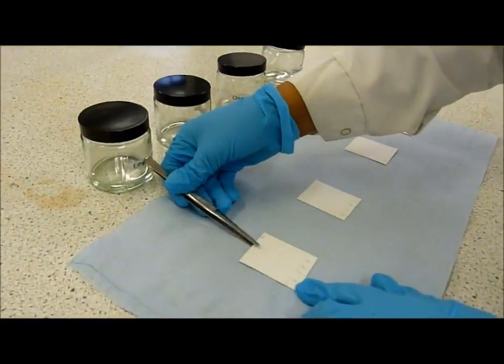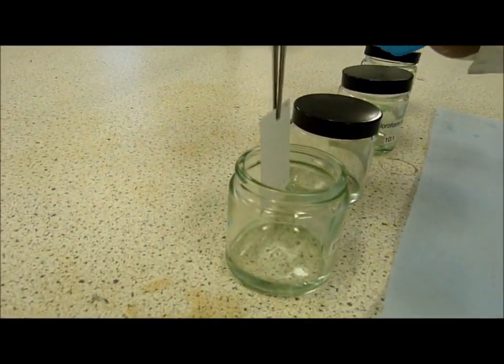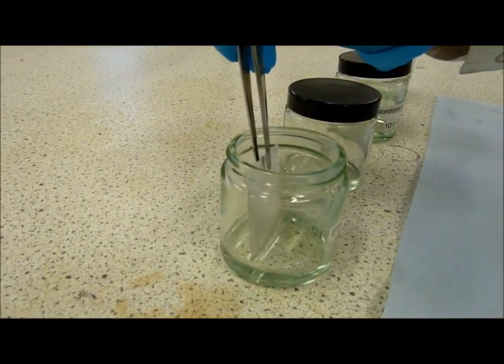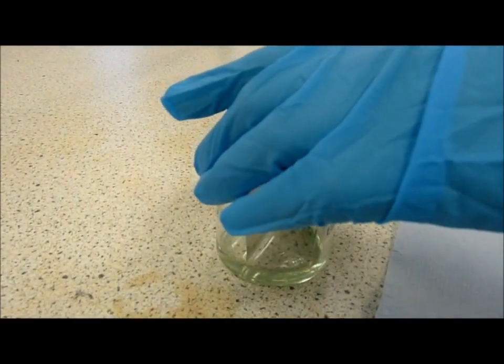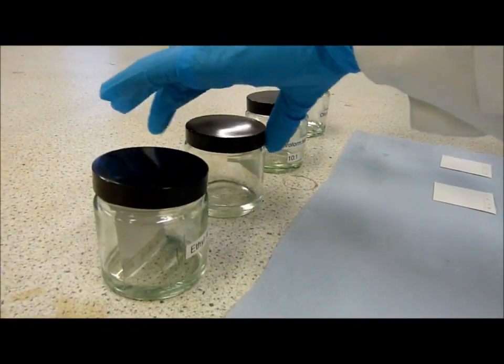Using the tweezers provided, place the plates upright in the correct mobile phase. Do not let the plate fall backwards or forwards and do not move the mobile phase bottles once the plate has been placed inside, as this could ruin the spot and the RF value.